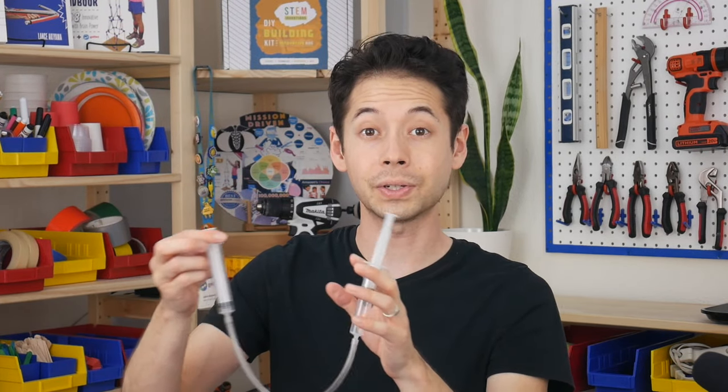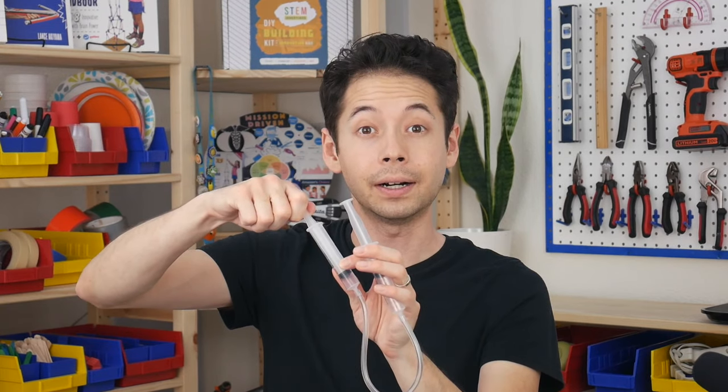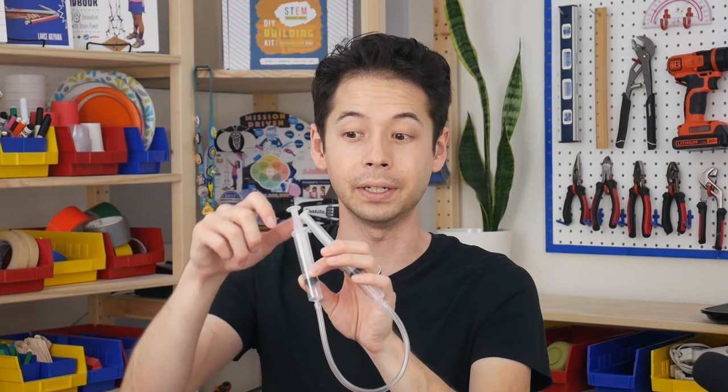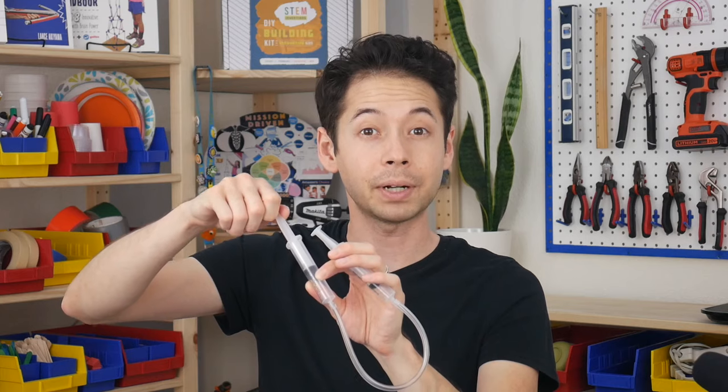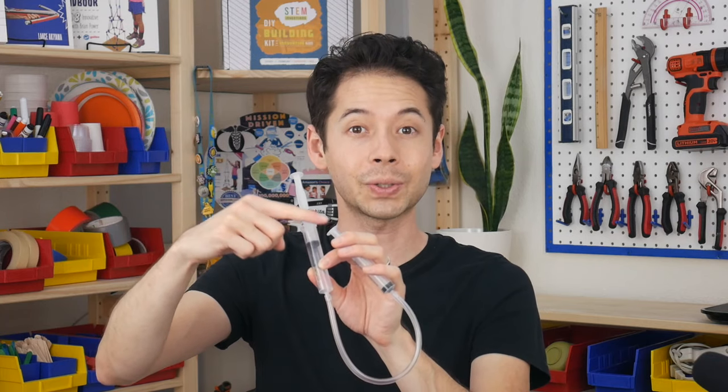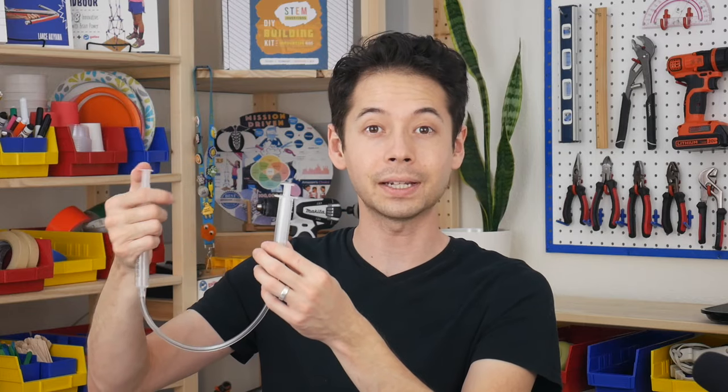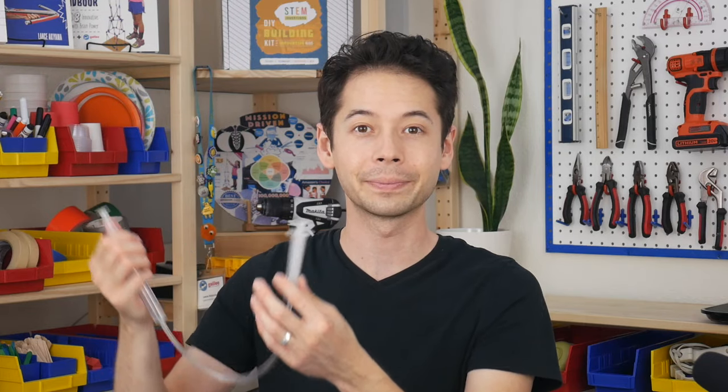And this works in reverse too. By pulling on this syringe we're creating a low air pressure zone here. Now the other syringe has relatively high air pressure compared to this one so when we pull on this that pressure needs to equalize by retracting that syringe. And in this project we're just using this principle to make a little lever move up and down. It's pretty simple but it's very cool and it's a lot of fun to play with.